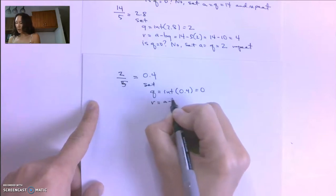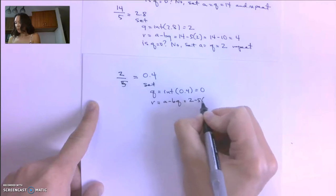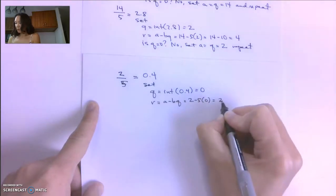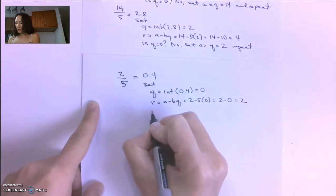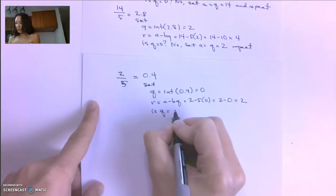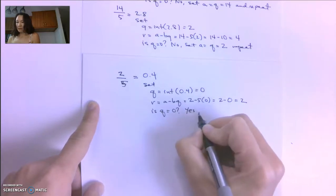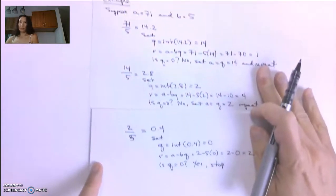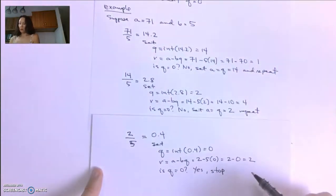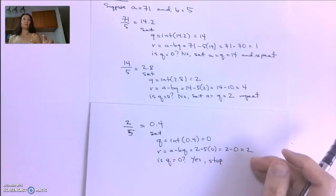2 minus 0 is 2. And then we ask, is Q equal to 0? And the answer is yes. So that means we stop. And that is the iterative application of the division algorithm.